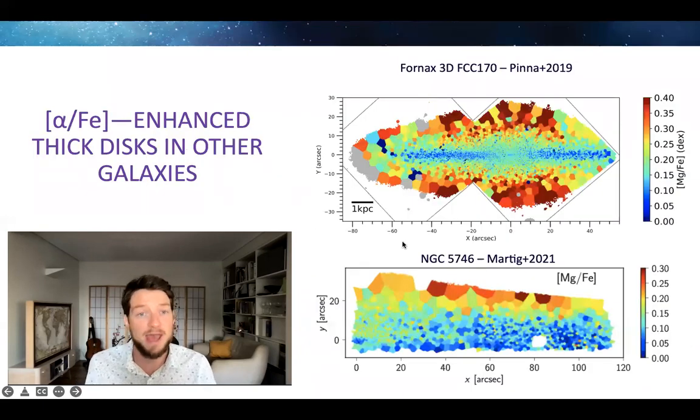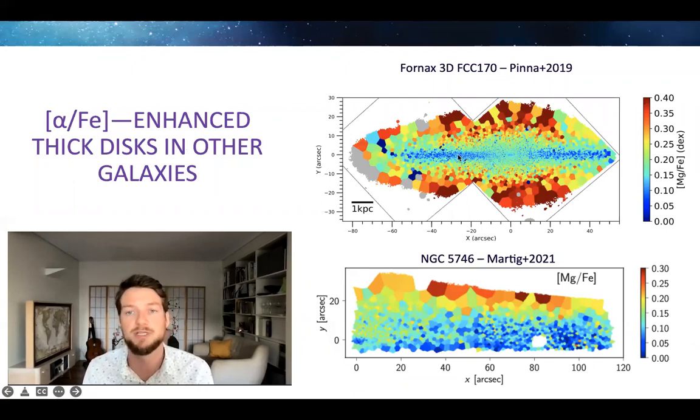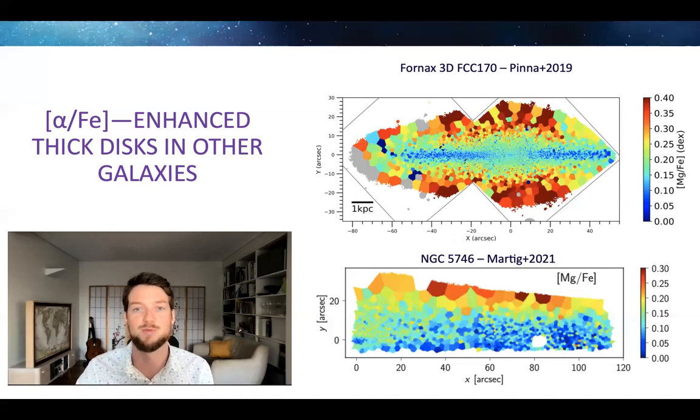As I said, we have seen alpha-enhanced disks in other galaxies. For example, here on the top right is a lenticular galaxy in the Fornax 3D survey, FCC 17, by Francesca Pinna et al., but also in this other S0-type galaxy, NGC 5746, which is from Marie Martig's work. I highly recommend watching her talk about this galaxy as well.